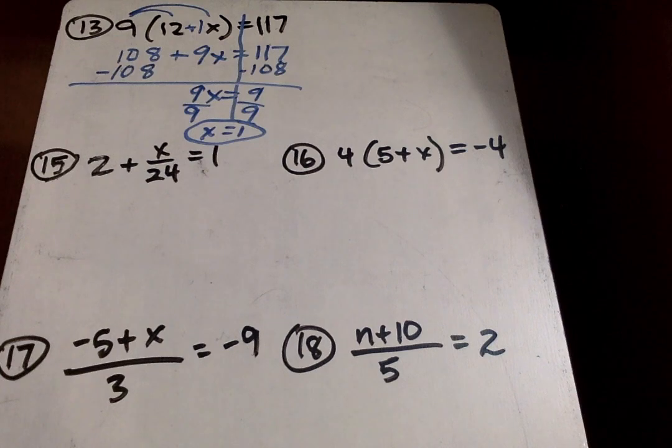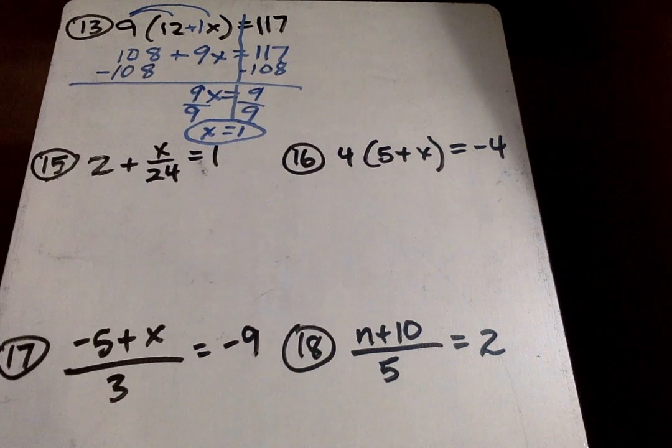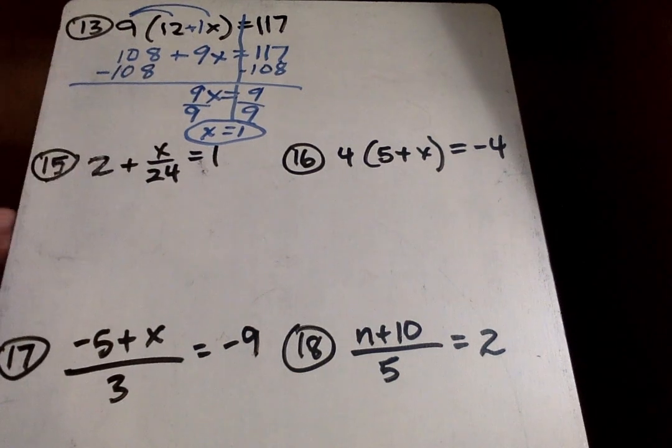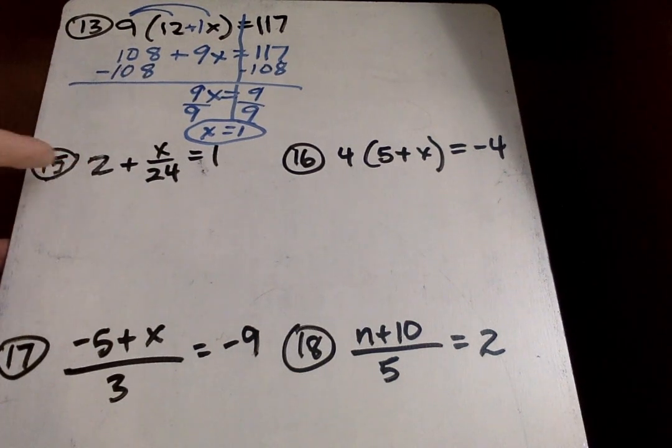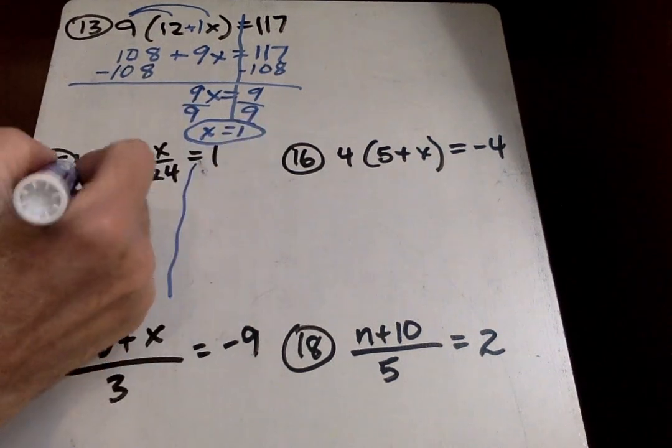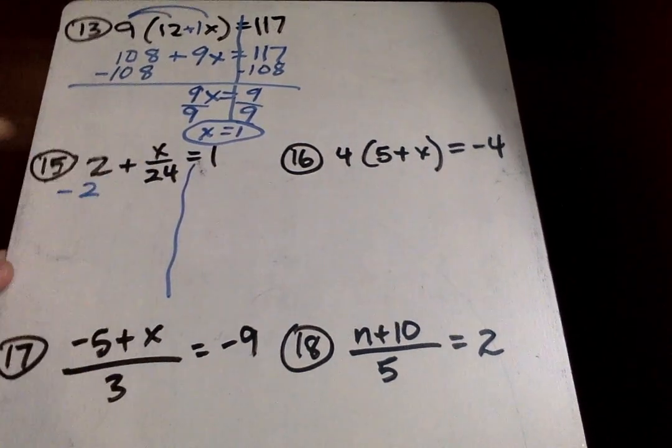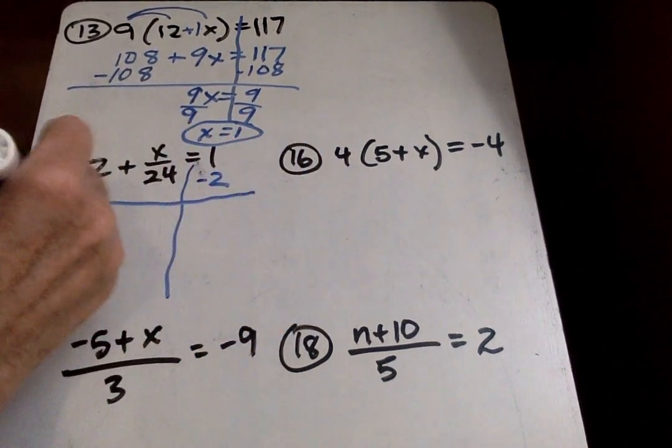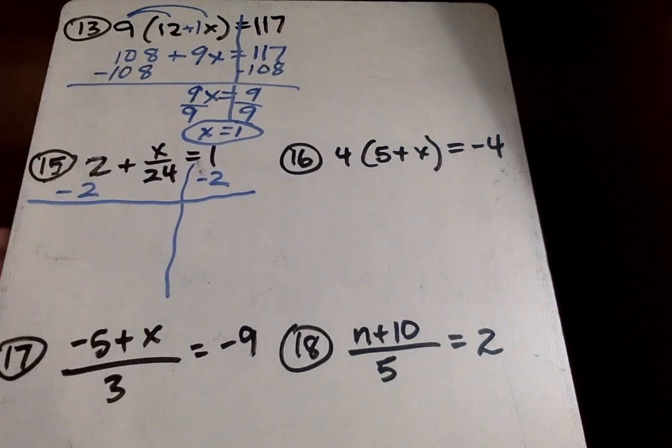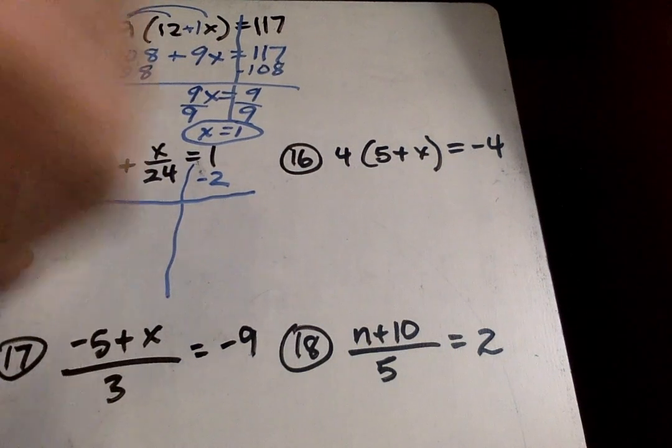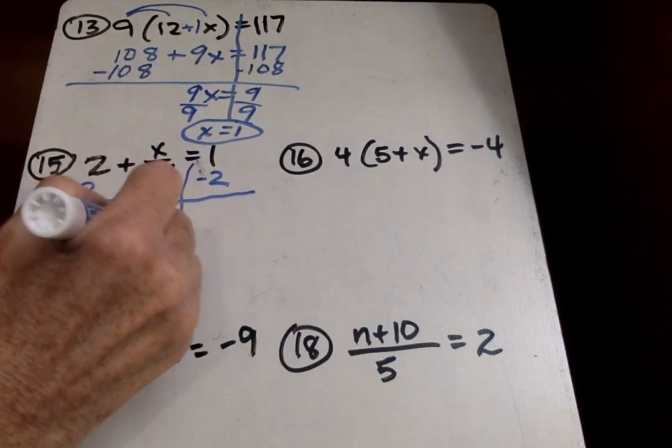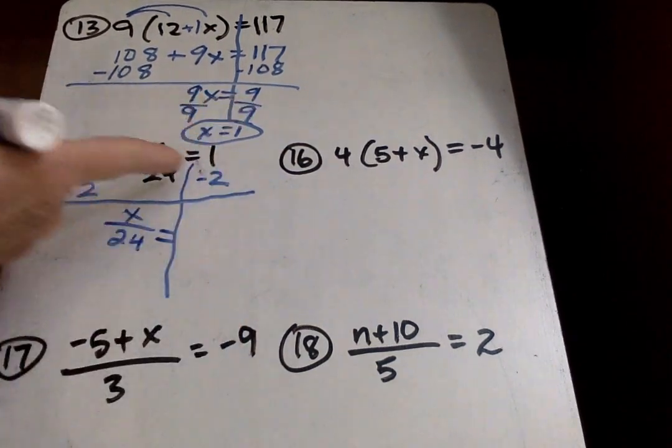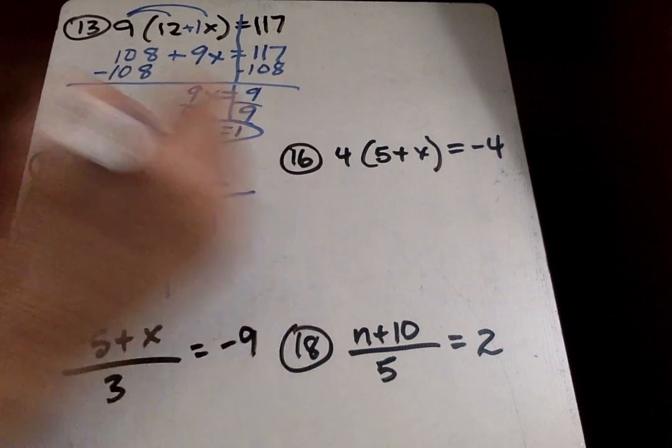I'm going to jump and let you do 14 on your own, and I'll go to 15. This one's kind of weird with a fraction in the middle, and this is where the variable is. So I have to get rid of this 2. Since it's positive, I'm going to go minus 2 here. Whatever I do on this side of the equation, I have to do over here. I bring this down. Watch in that sign. If it's subtraction, it'll be negative X over 24. But it's addition. So then I go X over 24 equals 1 minus 2, negative 1.